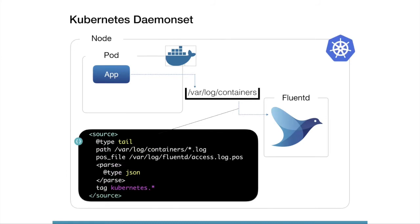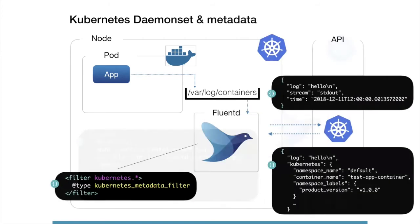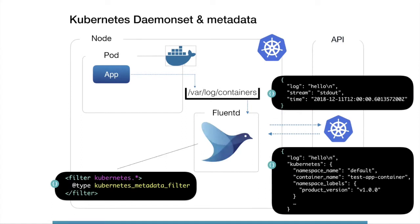On Kubernetes, we use a daemonset for collecting data from containers. Kubernetes stores container logs in the /var/log/containers directory, and Fluentd reads these logs using the tail input plugin. The daemonset images include a metadata filter by default. This filter gets metadata from the Kubernetes API server and adds it to the event record — for example, hostname, container name, and pod name. You can use this metadata on the processing side for aggregation or filtering.